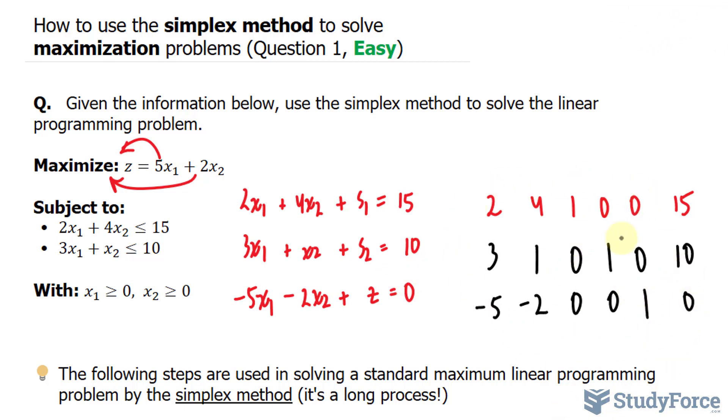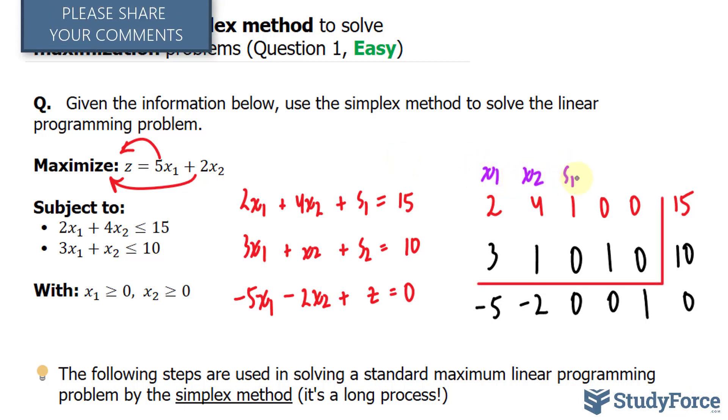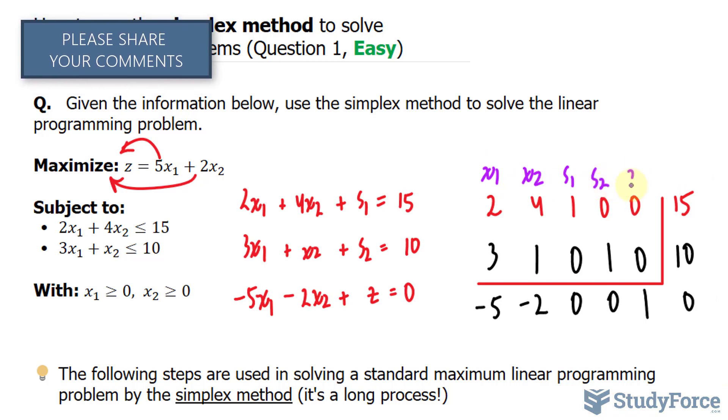What you see here is your augmented matrix. And just to show that this 15 is on the other side of the equation, I'm going to separate this with lines. Also, for convenience, I'll write down x sub 1, x sub 2, s sub 1, s sub 2, z, and c for the constant.